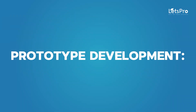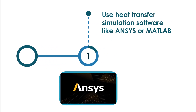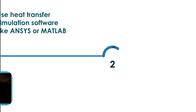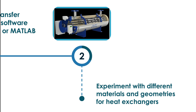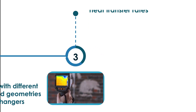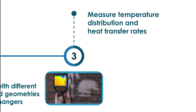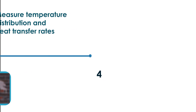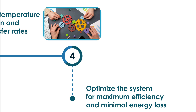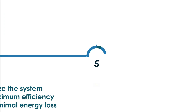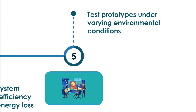For prototype development, use heat transfer simulation software like ANSYS or MATLAB. Experiment with different materials and geometries for heat exchangers. Measure temperature distribution and heat transfer rates. Optimize the system for maximum efficiency and minimal energy loss. Test prototypes under varying environmental conditions.